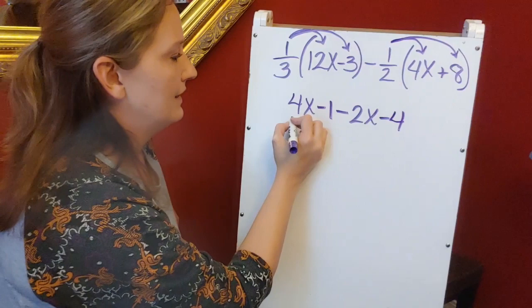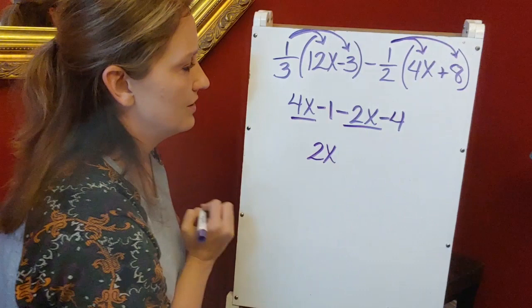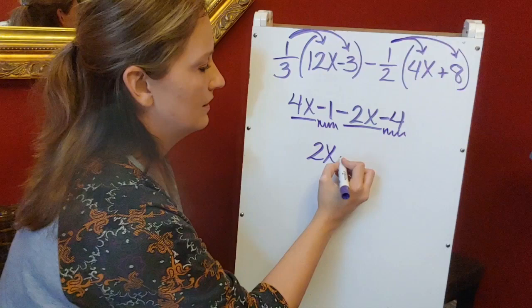And then I'm going to combine like terms. 4x minus 2x is just a 2x. Negative 1 minus 4 is minus 5. All right, I think that covers day 12. You got it!